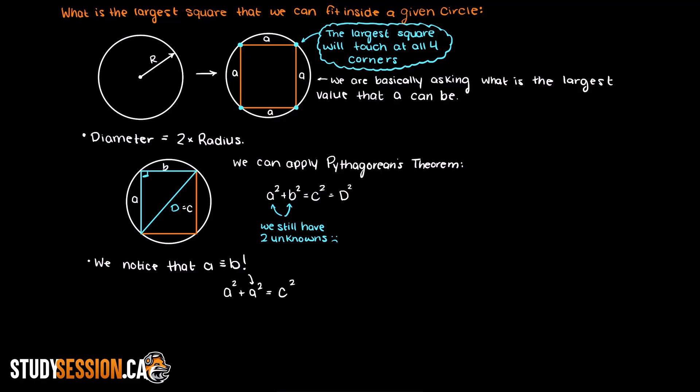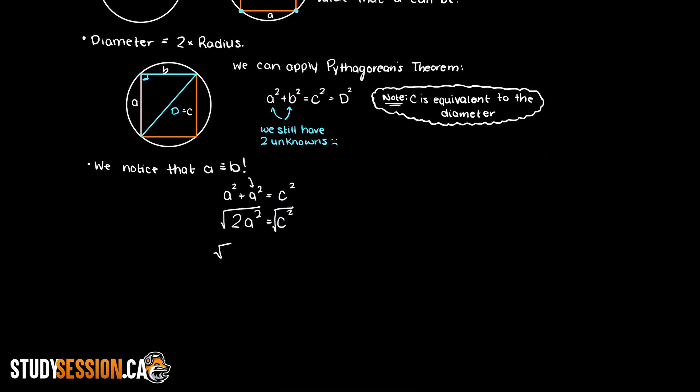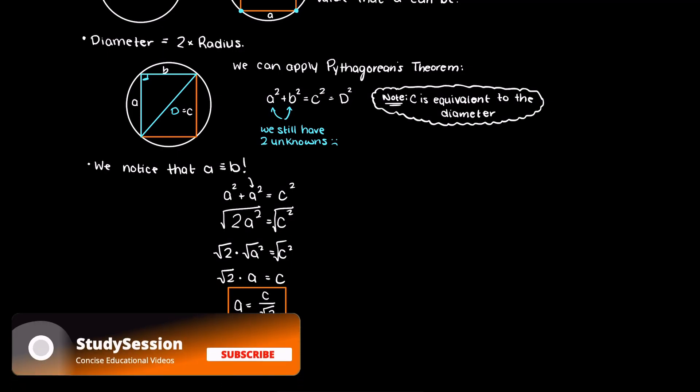Now we can plug that into Pythagorean's theorem and see that 2a squared is equal to c squared. Taking the square root of both sides of our equation leaves us with the square root of 2 times a equals c. Dividing by our square root of 2, we find that the largest square side that we can fit within this circle is going to be the diameter of our circle over root 2.